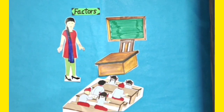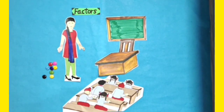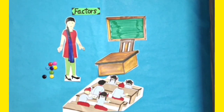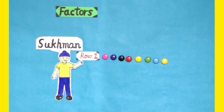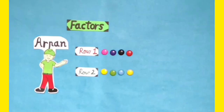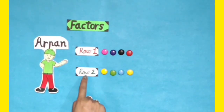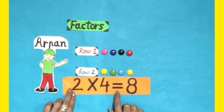Students, let's do another example of factors. The teacher distributes 8 buttons to each student and asks them to arrange the buttons in different ways, telling the kids that their arrangements should not match with each other. Sukhman arranges these 8 buttons in one row, so this can be represented as 1 into 8 is equal to 8. Arpan arranges these buttons in 2 rows with 4 buttons in each row, so this can be represented as 2 into 4 is equal to 8.